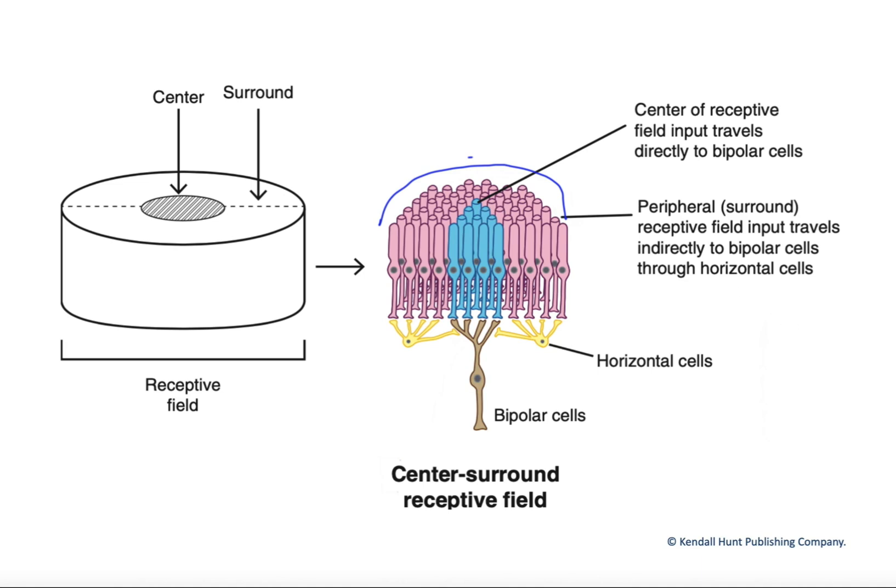Centrally located rods synapse directly with the bipolar cell, whereas the rods in the periphery here do not.